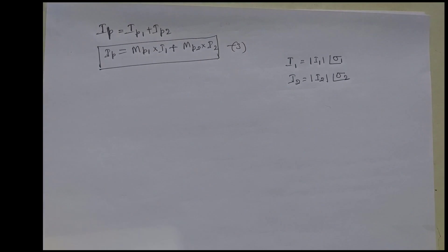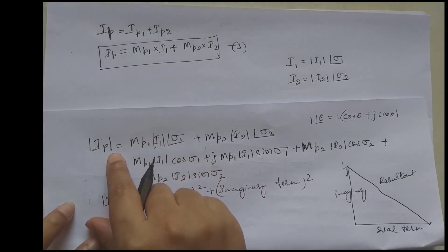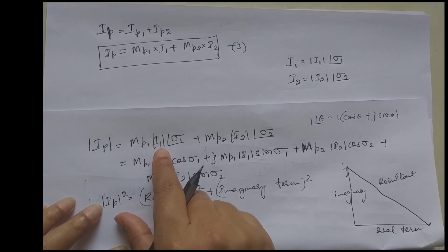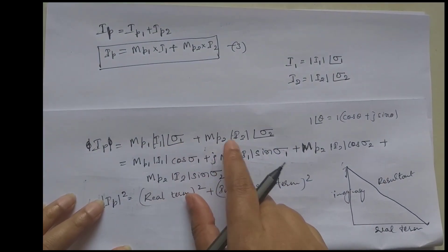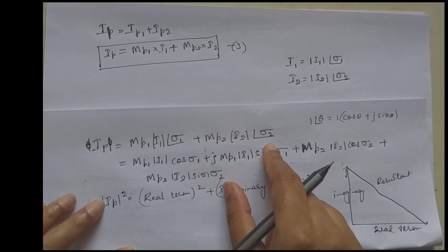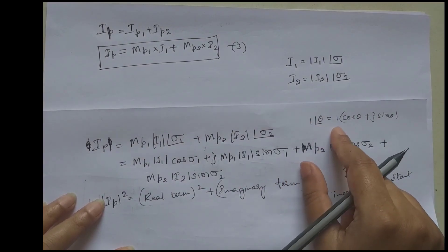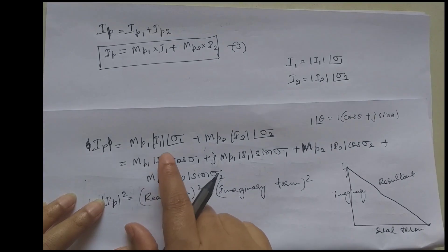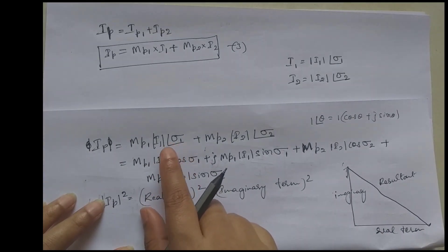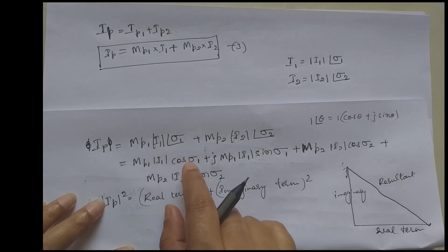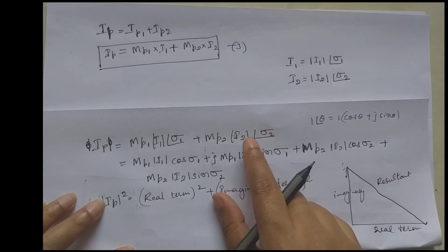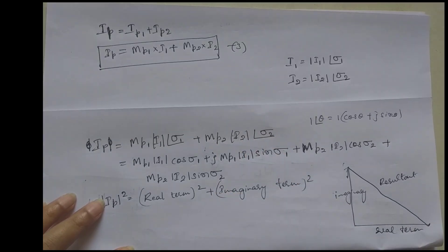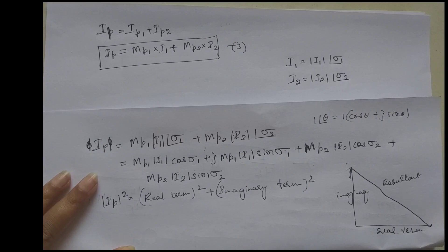We know that 1∠θ can be written as cosθ + j·sinθ. Similarly, I1∠σ1 can be written as I1·cosσ1 + j·I1·sinσ1. Similarly, I2∠σ2 can be written as I2·cosσ2 + j·I2·sinσ2.